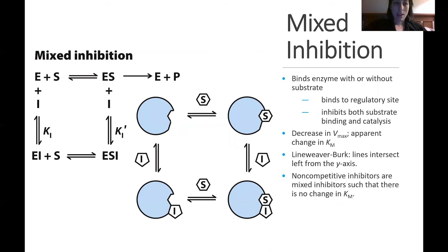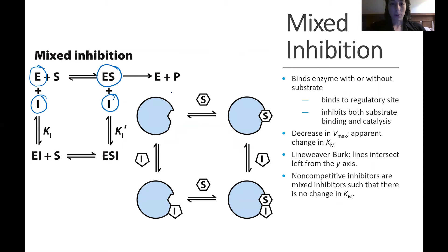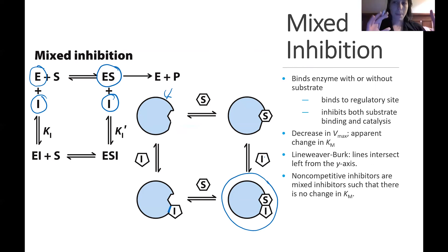With mixed inhibition, we can take the enzyme all by itself and bind the inhibitor, or we can have the enzyme already bound to substrate and then bind the inhibitor. Visually, here's your enzyme all by itself — the inhibitor can bind just to the enzyme, or your enzyme could have already made a complex with the substrate and then the inhibitor binds on. It is not competitive — it's not going for the same spot as the substrate — but it doesn't matter if the substrate is there or not to cause inhibition.